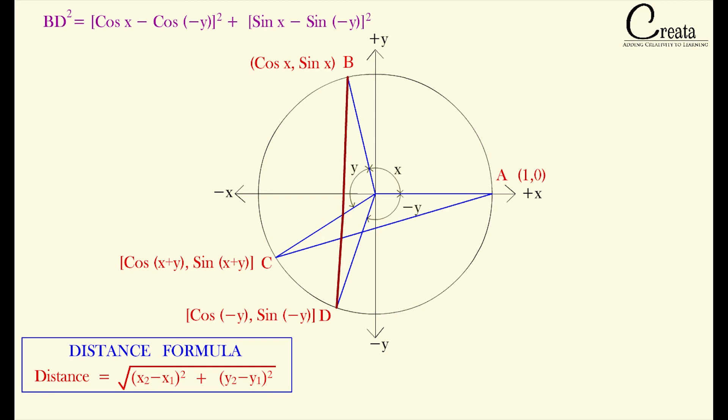Let's move further. In similar fashion we can calculate the length A, C. We know both the end coordinates. So applying the distance formula we got AC square is equal to 1 minus cos x plus y whole square plus 0 minus sin x plus y whole square.